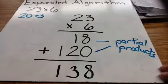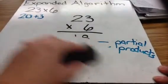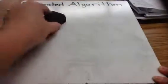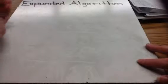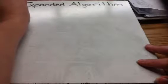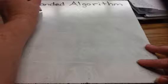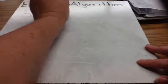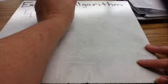I'm going to erase this and now let's work on a 3-digit number multiplied by a 1-digit number, and I'm going to show you how the expanded algorithm works the same way — it just has one more row. Our 3-digit number multiplied by a 1-digit number is going to be 482 times 4.